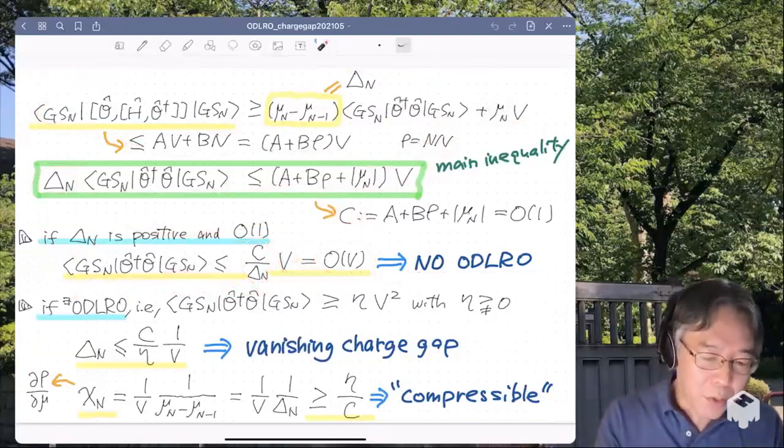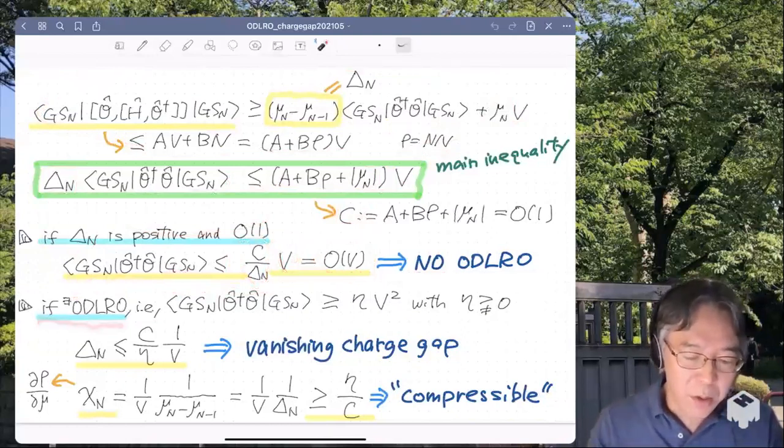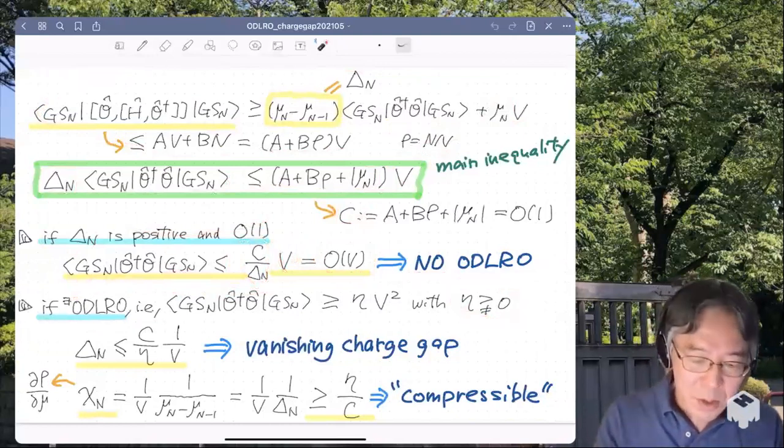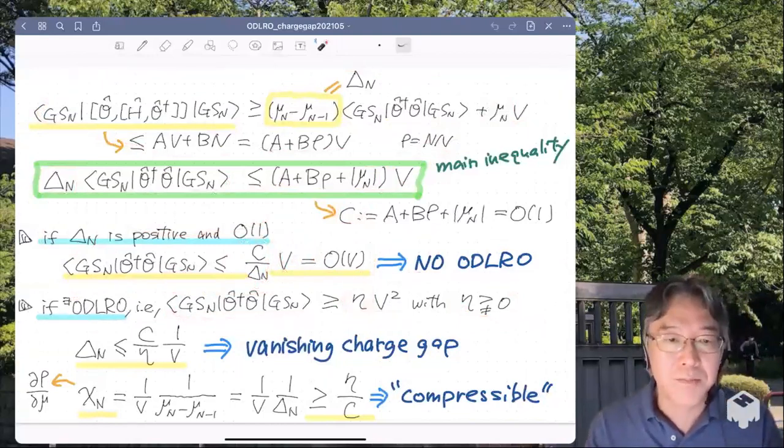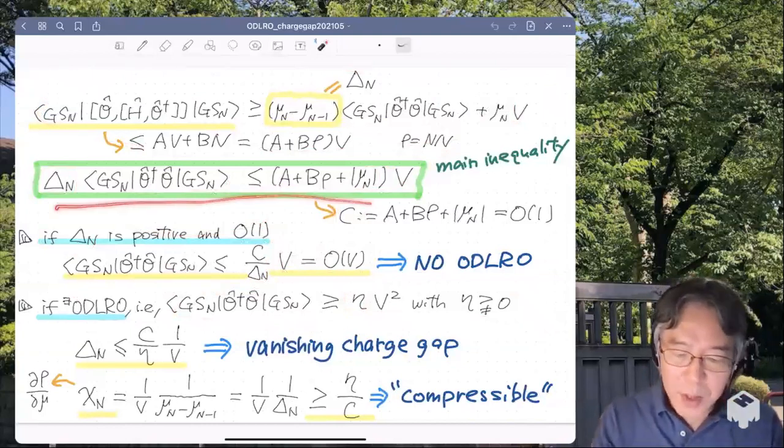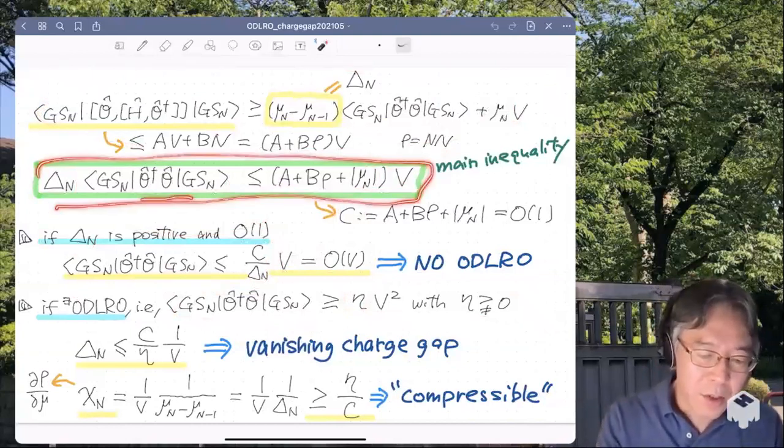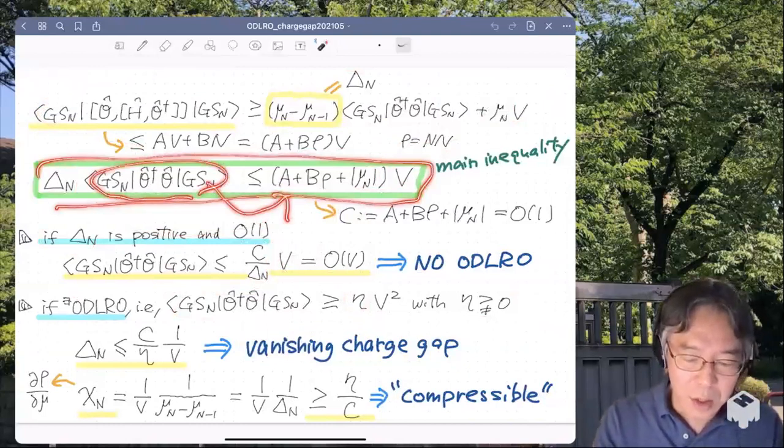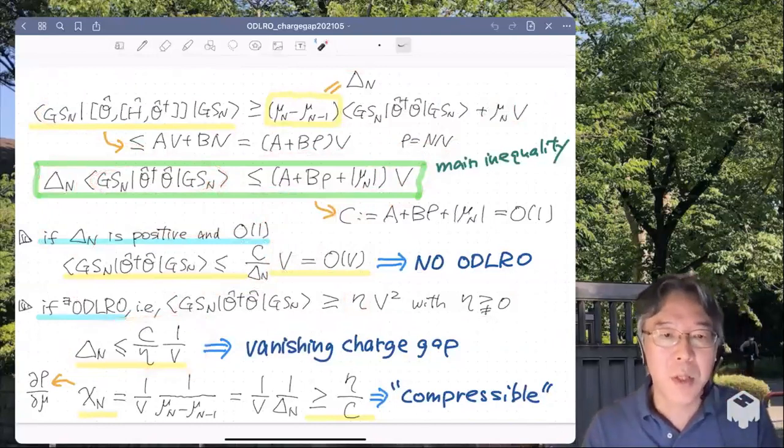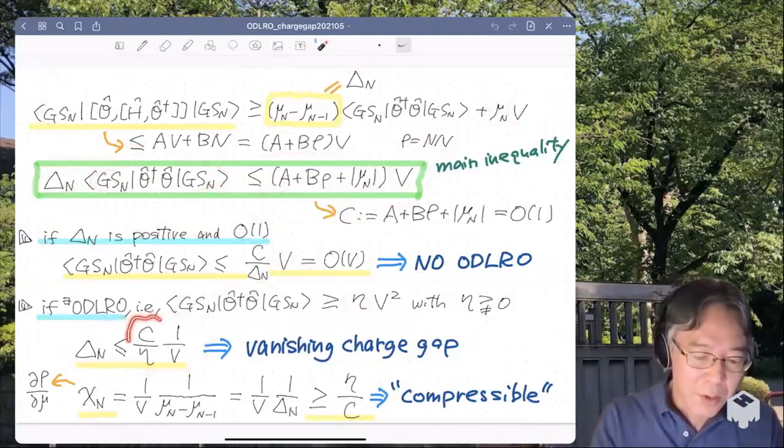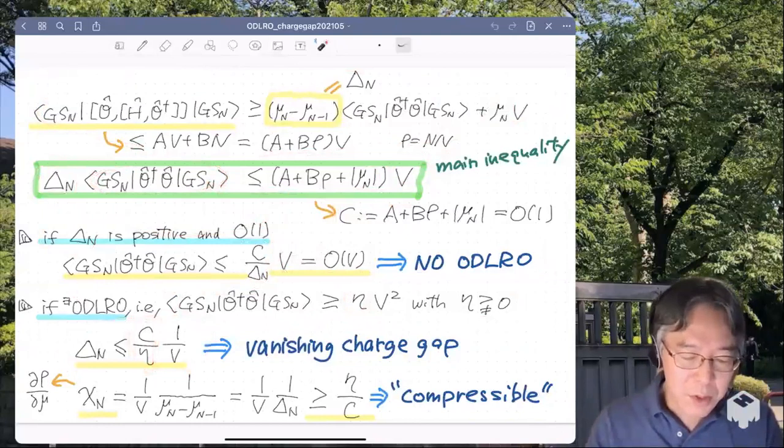Now, next, I suppose that there is non-zero off-diagonal long-range order. That means there is a positive eta. And this expectation value of O dagger O is lower bounded by eta times V squared. Now, I go back to the main inequality. And I think I bring this guy here and plug in this bound to get this upper bound for the charge gap delta_N. And C over eta is of the one constant. So this shows that delta_N is vanishingly small.